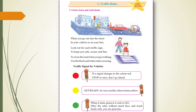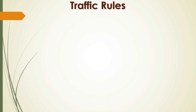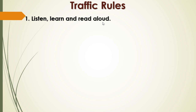Dear children, this is your textbook page. This is Unit 7, first lesson — that is Traffic Rules, page number 63. Here we can see some rules written that we will go through one by one. Traffic rules — first, listen, learn, and read aloud.